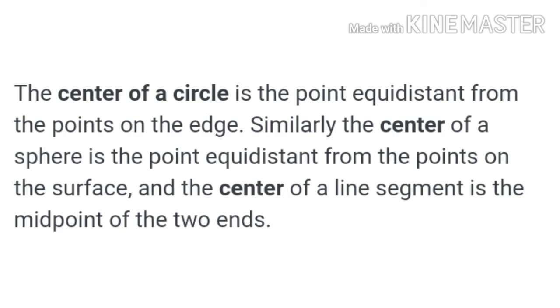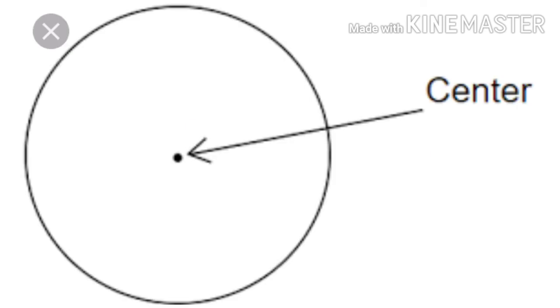A circle is a simple closed curve whose every point lies at an equal distance from a fixed point inside the curve. This fixed point is called its center.